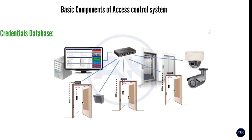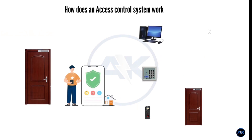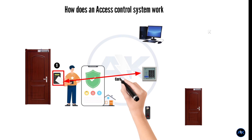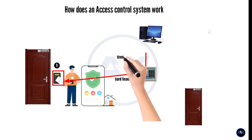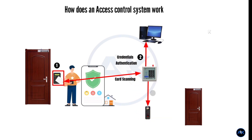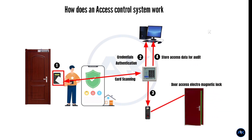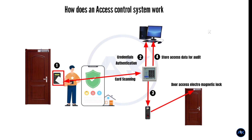When a person wants to gain access to a secure area, they present their credential to a reader. The reader then sends the credential information to the Access Control Panel, which checks the credential against the database. If the credential is valid and the individual has the necessary permissions, the Access Control Panel instructs the locking mechanism to release and grant access. If the credential is invalid or the individual's permissions do not allow access, the Access Control Panel denies entry and keeps the locking mechanism engaged.